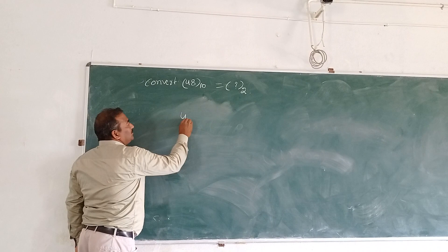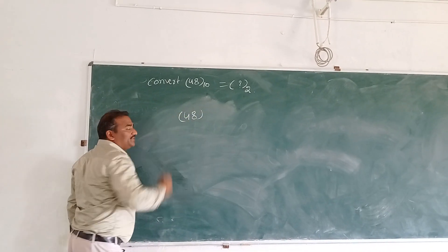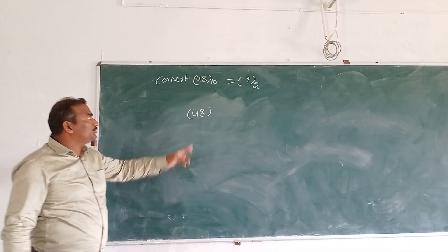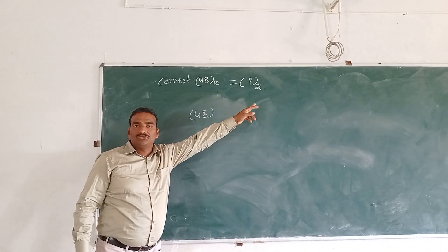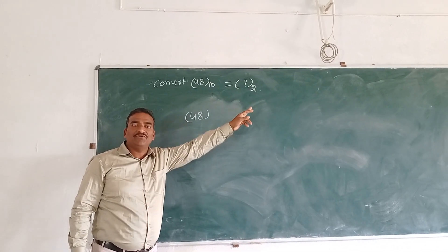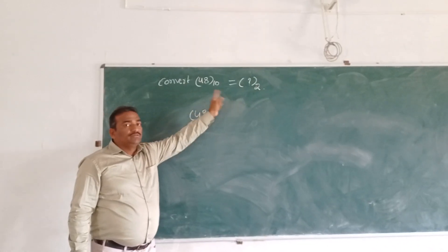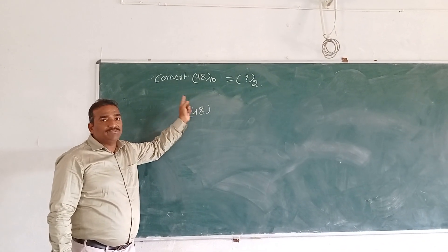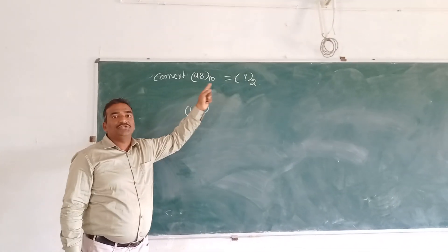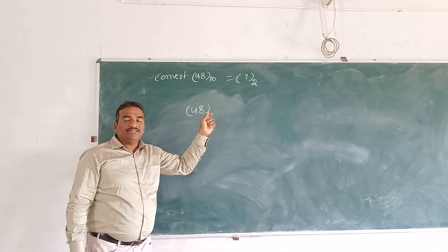decimal value. 48 is the decimal value. We need to convert the decimal value into base 2. Base 2 value is the binary value. So we're converting decimal value 48 into binary value.